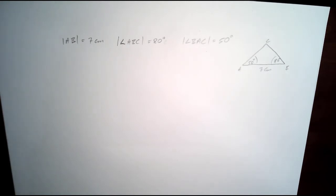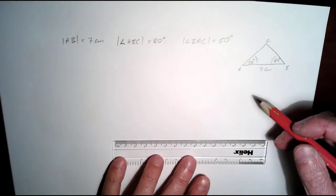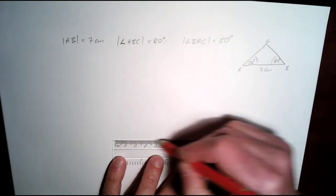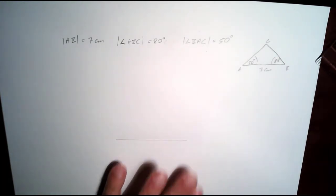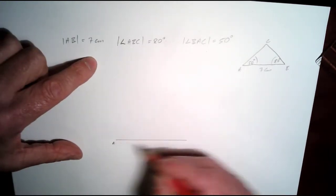So we're going to start here by drawing 7 cm. There's our 7 cm and that's AB.